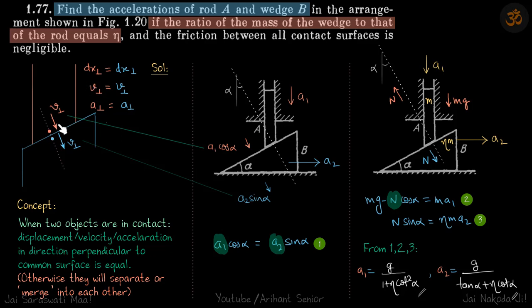So if this particle moves let's say displacement dx perpendicular in this direction and this particle moves a distance dx perpendicular, they have to be same otherwise the surface will get separated. So when two objects are in contact then displacement or velocity or acceleration in direction perpendicular to the common surface is equal.